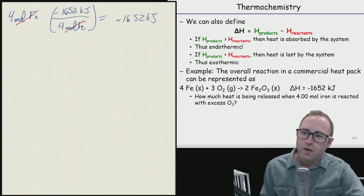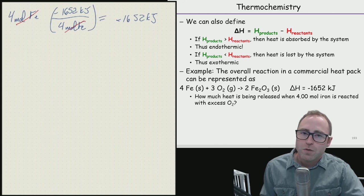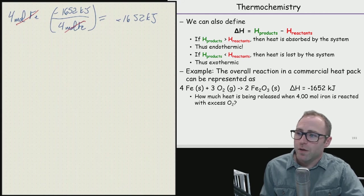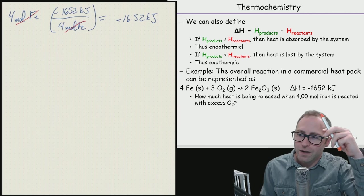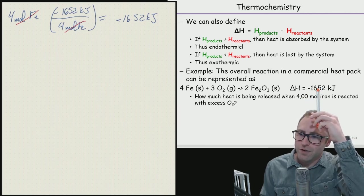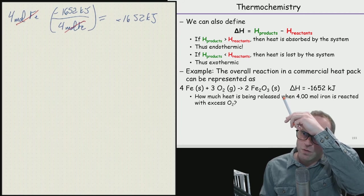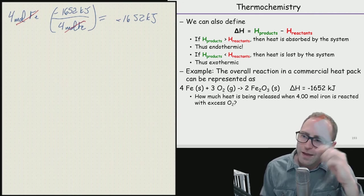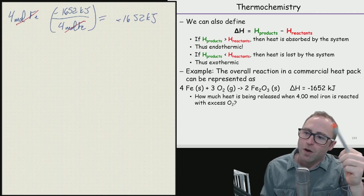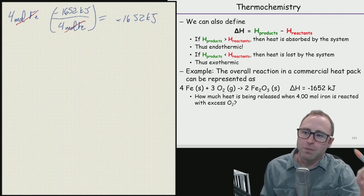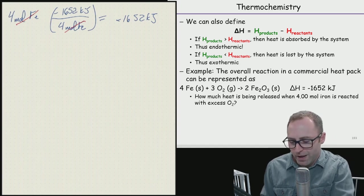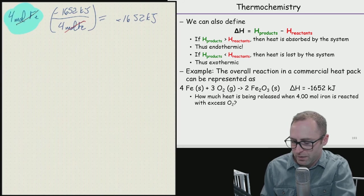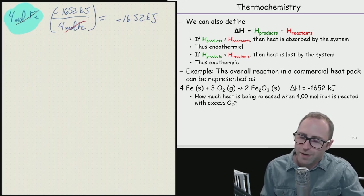To add any flavor to this, we could change four moles of iron to any other number — say 52 grams of iron. If we have 52 grams of iron, all we have to do is convert grams of iron into moles of iron, then use that mole value with the 1,652 kJ ratio to find exactly how much energy is going to be released.